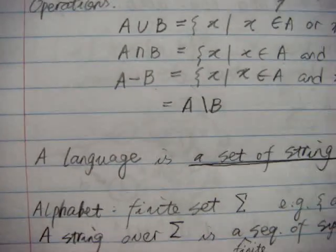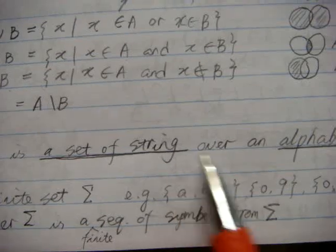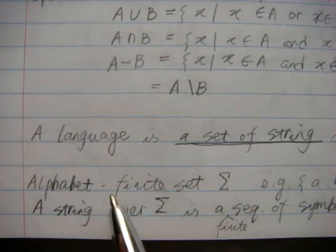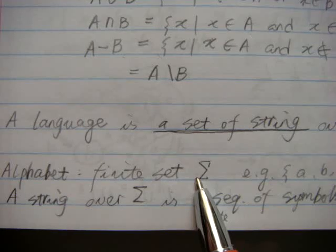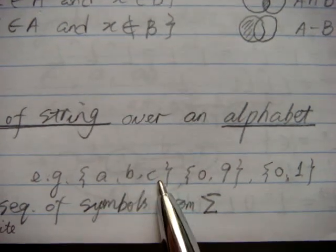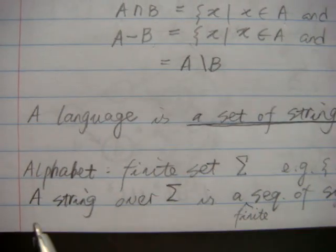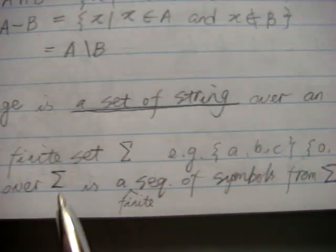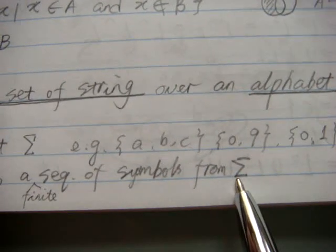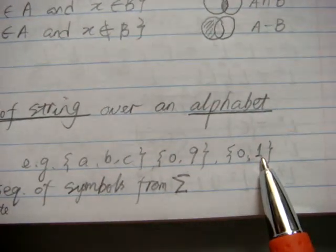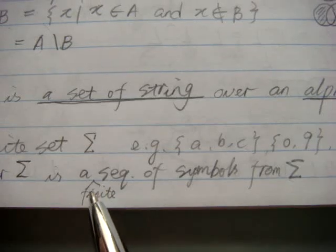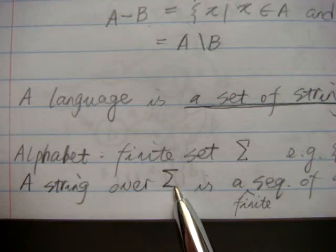Next, we're going to talk about what a language is. A language is a set of strings over an alphabet. An alphabet is a finite set of symbols — we usually use sigma to represent the alphabet. For example, {A, B, C} is an alphabet, {0–9} is an alphabet, and {0, 1} is an alphabet. A string over the alphabet sigma is a finite sequence of symbols from sigma. For example, for {0, 1}, the string '010' is a valid string defined over the sigma alphabet.